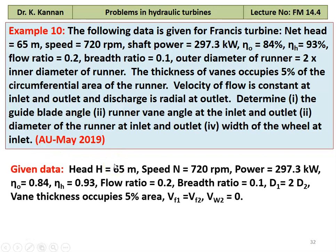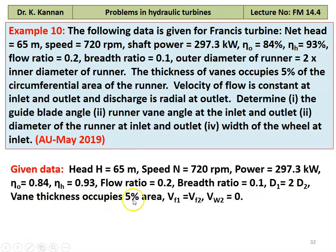Given data: head equal to 65 meter, speed 720 RPM, power 297.3 kilowatt, overall efficiency 0.84, hydraulic efficiency 0.93, flow ratio 0.2, breadth ratio 0.1, D1 equal to 2 times of D2, vane thickness occupies 5% of the area, Vf1 equal to Vf2, and Vw2 equal to 0.